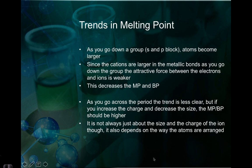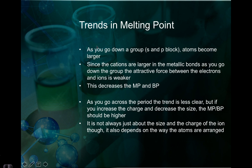For melting point, as we go down a group in the S and P block, the atoms become larger. You have to remember that if you have particles that are larger, they can't get as close together. So since these atoms can't get as close to each other, the melting point will go down because they're not going to be as attracted to each other. That means as we go down a group, we tend to see that the melting point and boiling point goes down if it's a metal.